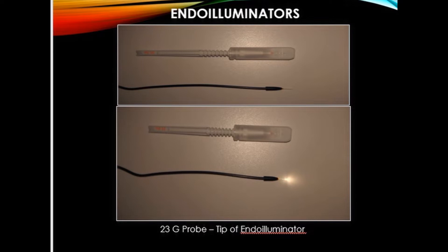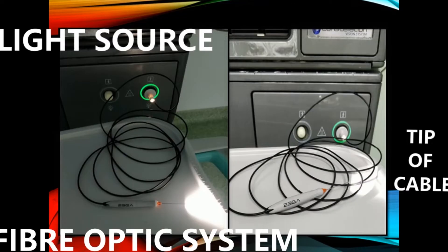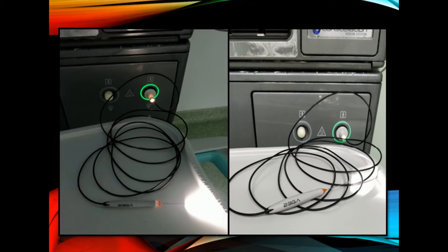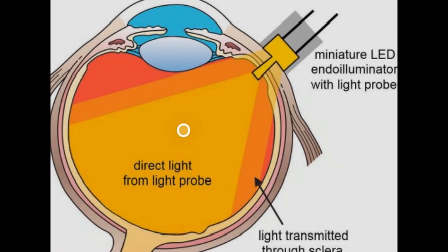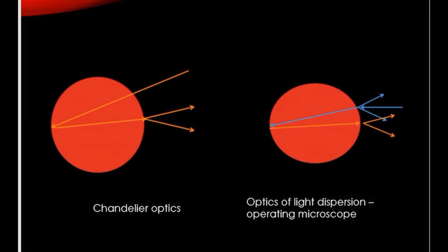The advent of endoillumination has brought about substantially improved visualization by providing a stable, stationary and diffuse form of illumination. In chandelier illumination, the light source is fixed posterior to the lens via the pars plana route. The light is directed at the fundus and gets reflected back to retroilluminate the lens. The retroillumination is affected only once while the light rays exit the eye, as opposed to microscope illumination wherein it is affected by the corneal opacity twice — during entry as well as exit.